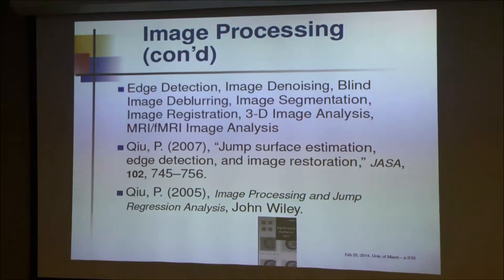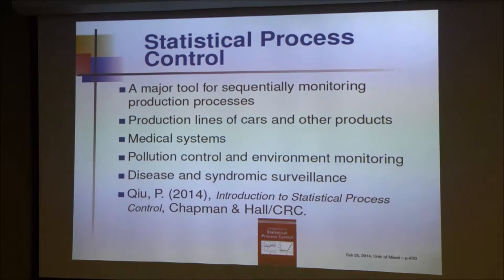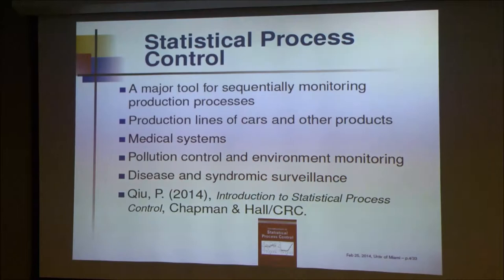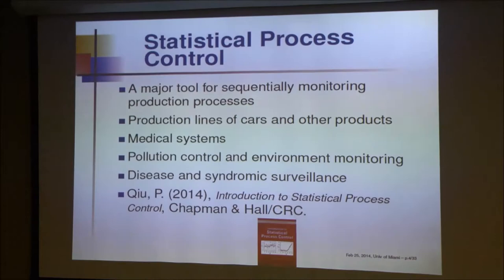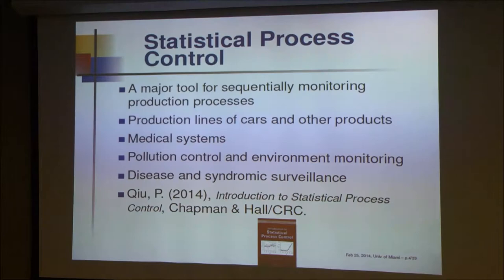As mentioned, I spent many years on quality control as well. After I moved to Minnesota in 1998, most of my research time was on statistical process control. Statistical process control is used in almost all factories — it's a major statistical tool to monitor a process like a production line to make sure products are good. This kind of monitoring can also be applied to medical systems like hospital operations, pollution control, environment monitoring, and disease and genomic surveillance, which I will discuss today.